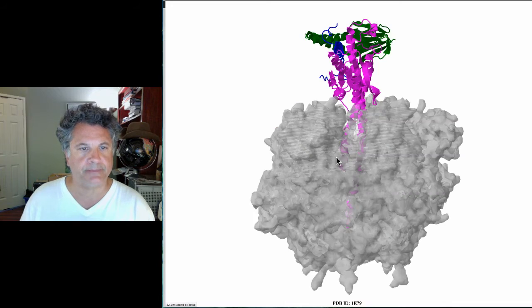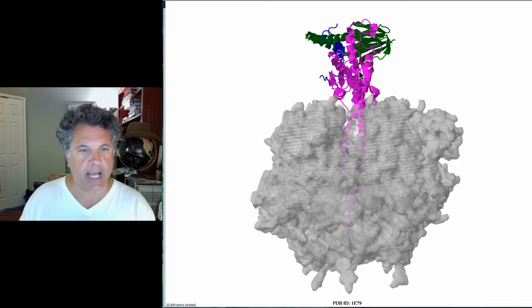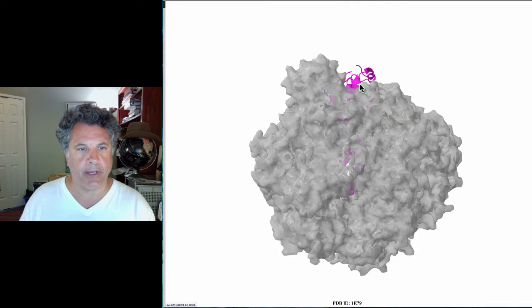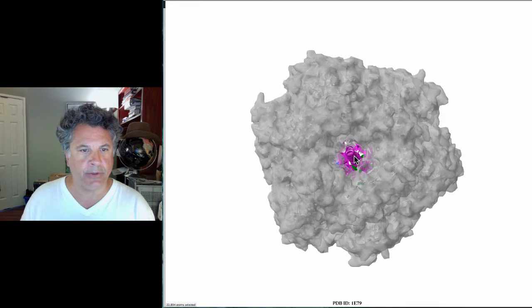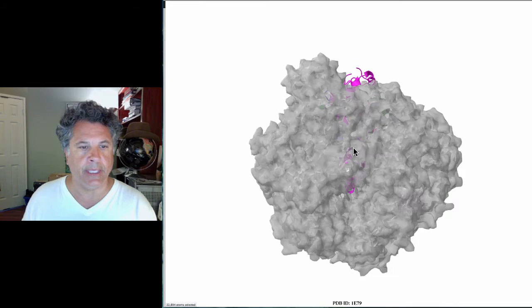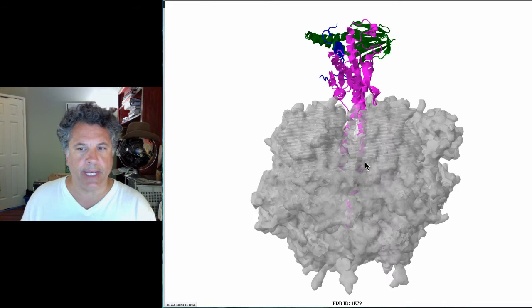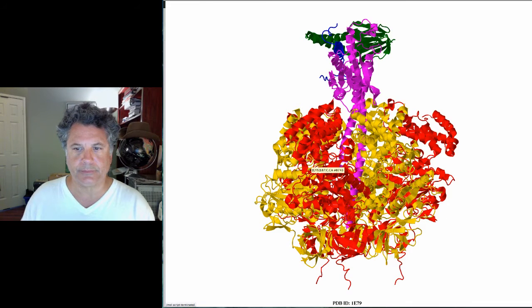The red ones are not catalytically active. You can see that this axle, the gamma subunit, projects deeply into the catalytic domain. As the rotor spins, this axle is linked to that and also spins.